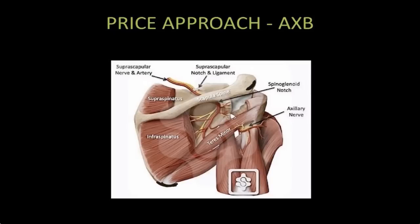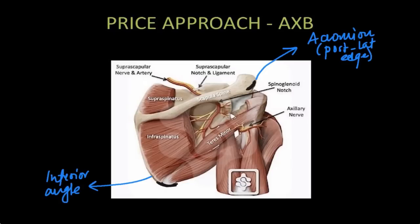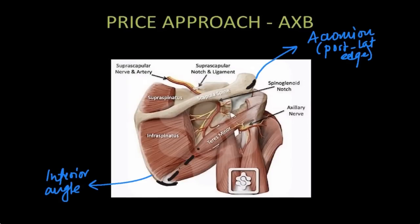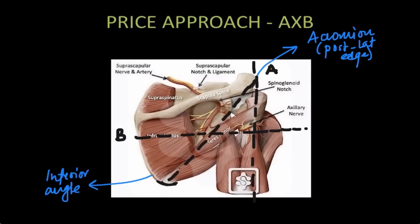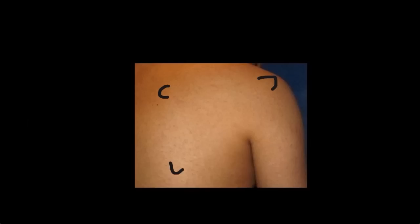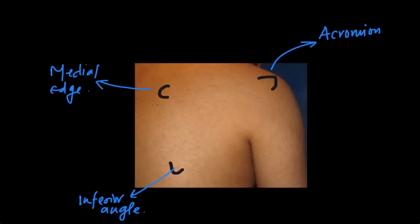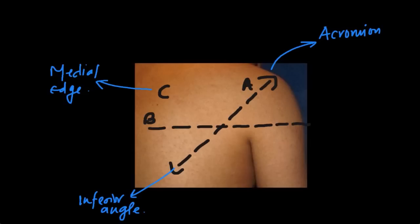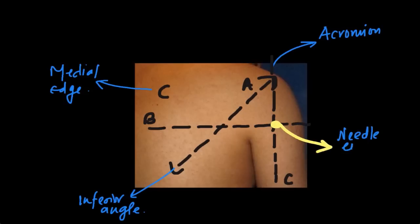In the Price approach to axillary block there are two landmarks to be palpated: first is the posterolateral edge of the acromion, and the second is the inferior angle of the scapula. You join these two points and choose the midpoint of this line, through which a horizontal line is drawn. Let's call the first line line A and the second line line B. We then drop a vertical from line A and call that line C. The intersection of line C and line B gives us the needle insertion point, which approximately corresponds to the quadrangular space. In the patient you can easily feel three landmarks: medial edge, acromion, and inferior angle. You draw line A between acromion and inferior angle, draw horizontal line B at the midpoint, then drop a perpendicular to get line C, and the intersection of lines B and C is the needle entry point.